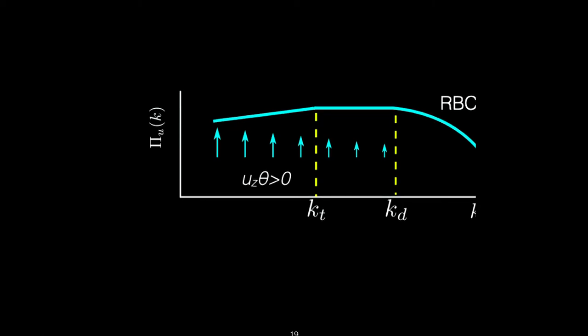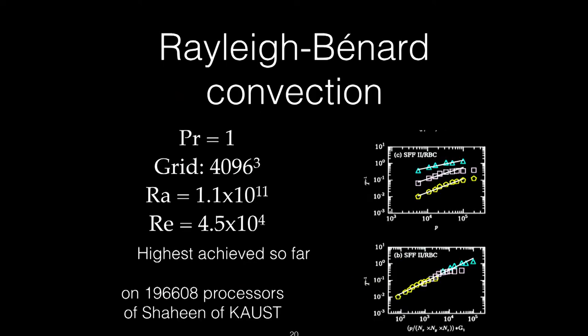We started doing the simulation. We did a very big simulation. This 4,096 cube simulation with our code, it's a machine in KAUST, Shaheen 2. We reached Rayleigh number quite large. In spectral, this is the highest, 10^11. I will show you what we get. It is there a bit of surprise.